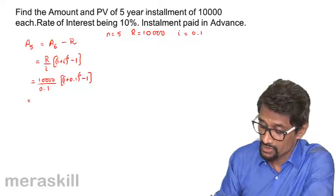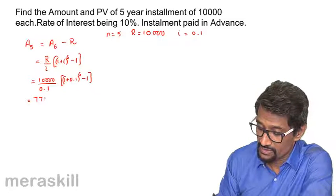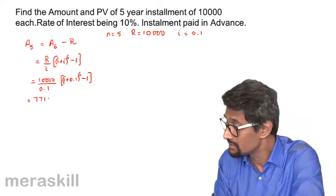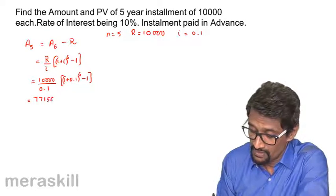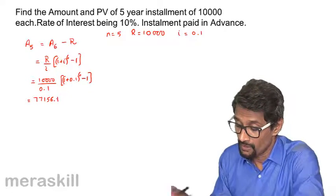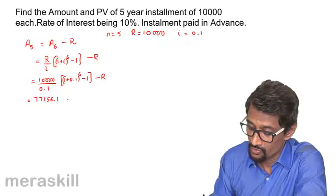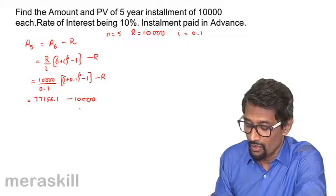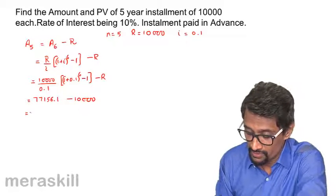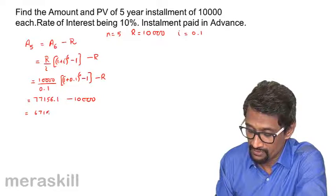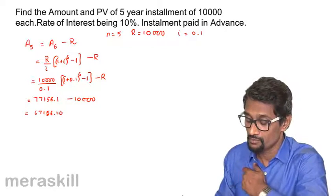This amount turns out to be 77,156.10. From this we subtract R, so minus 10,000, which turns out to be 67,156.10.